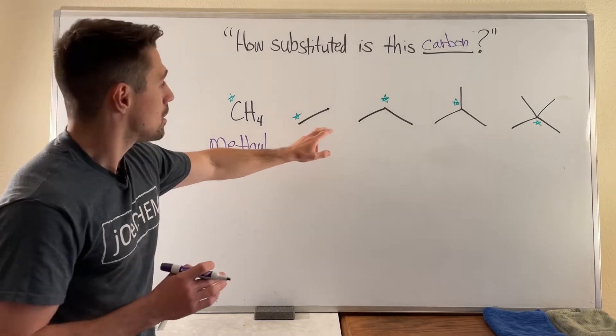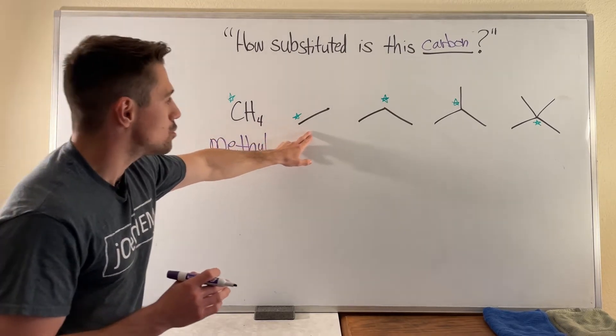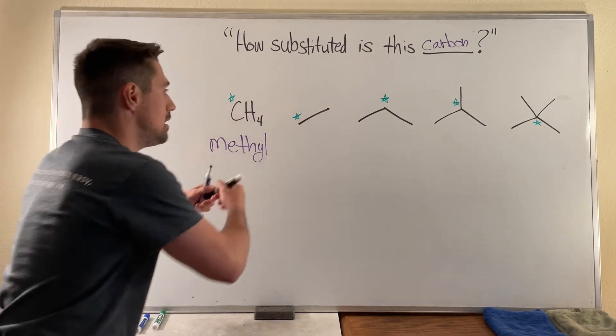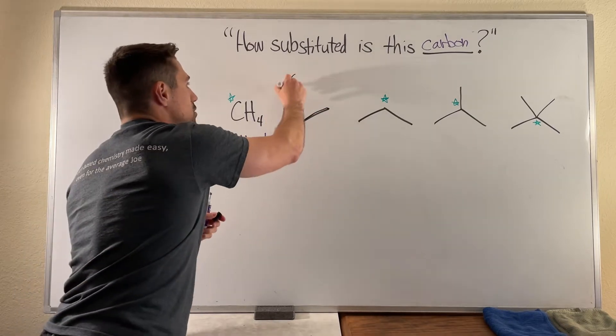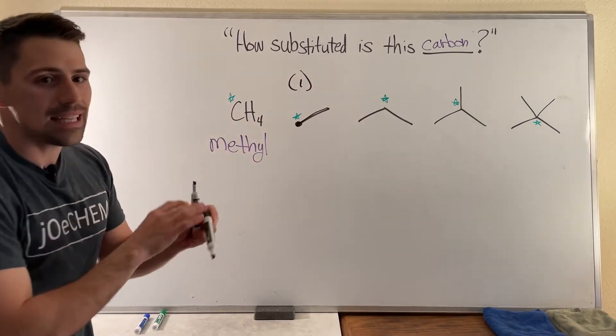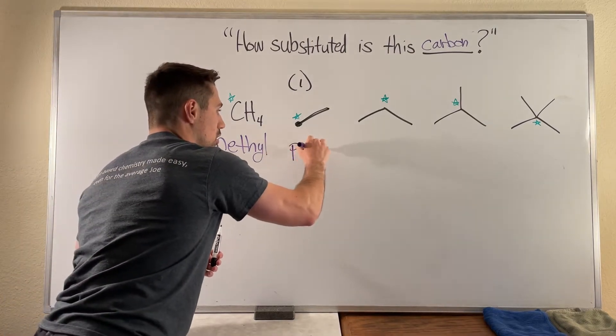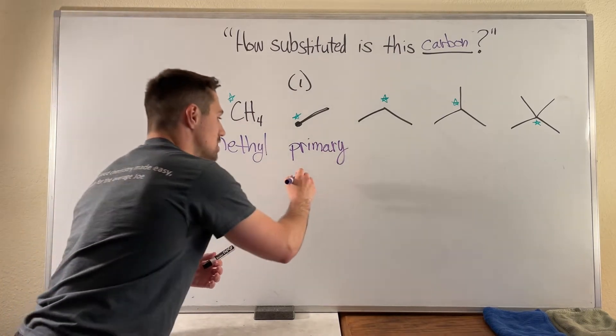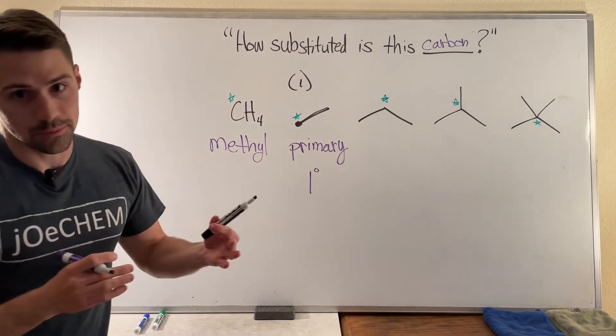Moving over here, right now this green starred carbon is attached to one other carbon. We only see that this one right here has one neighbor carbon. So because it only has one, I can see that this is a primary carbon, the green starred carbon. So you can either write primary out or a very popular shorthand is to do the number one and a little degree symbol.